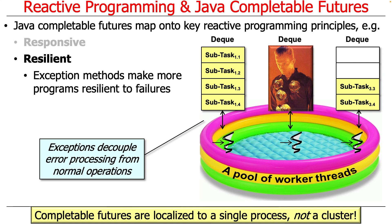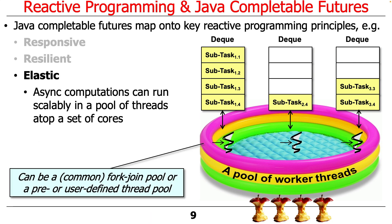Keep in mind that completable futures run in a single process, not a cluster — just like parallel streams, same basic thing. Another theme is elasticity: you want the computations to run scalably in a pool of threads that are themselves mapped to a set of cores. We can use the common fork-join pool or other pools. That's the main difference between the completable futures framework and the parallel streams framework — completable futures can run in any kind of thread pool, whereas parallel streams must run in the common fork-join pool unless you do unusual things.